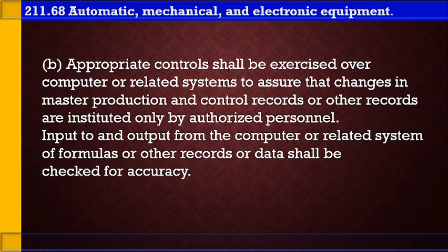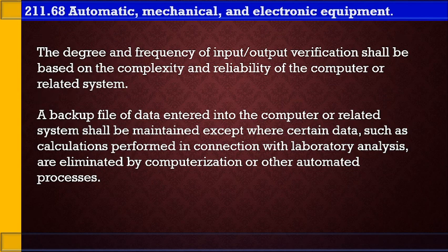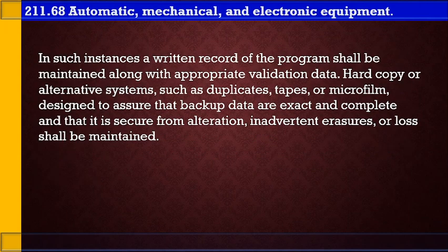Appropriate controls shall be exercised over computer or related systems to assure that changes in master production and control records or other records are instituted only by authorized personnel. Input to and output from the computer or related system of formulas or other records or data shall be checked for accuracy. The degree and frequency of input or output verification shall be based on the complexity and reliability of the computer or related system. A backup file of data entered into the computer or related system shall be maintained, except where certain data such as calculations performed in connection with laboratory analysis are eliminated by computerization or other automated processes. In such instances, a written record of the program shall be maintained along with appropriate validation data.